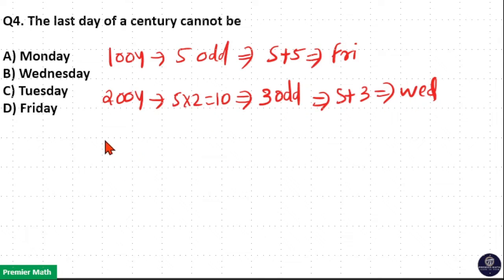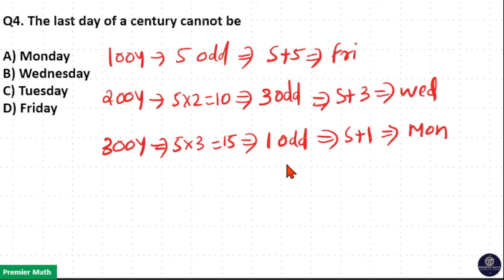Again, 300 years contains 5 into 3, 15. 15 by 7 will give you 1 odd day. So 300 years contains 1 odd day, which means Sunday plus 1 is Monday. So last day of 3rd century, Monday.